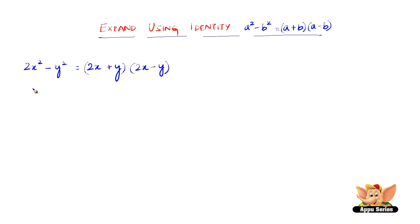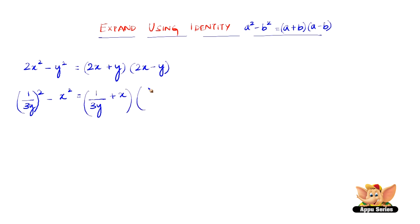Let us consider another one which is 1 by 3y the whole square minus x squared. This is nothing but 1 by 3y plus x into 1 by 3y minus x. This is a very simple identity: a squared minus b squared equals a plus b into a minus b.